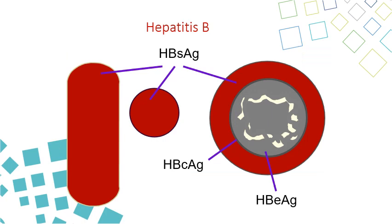Hepatitis B is a DNA virus that has three types of antigen: S antigen, C antigen or core antigen, and E antigen, which is the infectivity antigen.